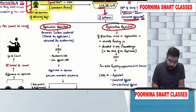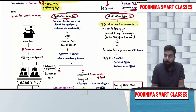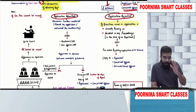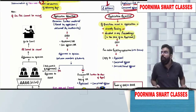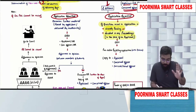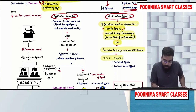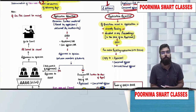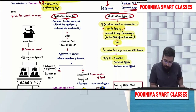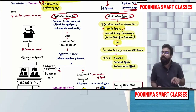When will they reject? If the question raised in the application is already pending or decided in any proceeding in the case of the applicant, they will give an opportunity of being heard and then reject and pass the order with reasons. A copy of the rejection order shall be given to the applicant, concerned officer, and his jurisdictional officer.